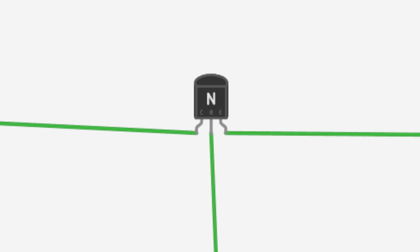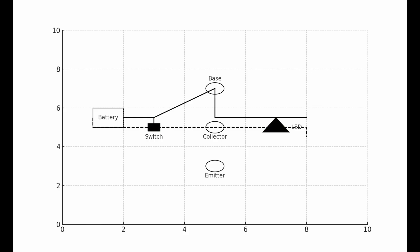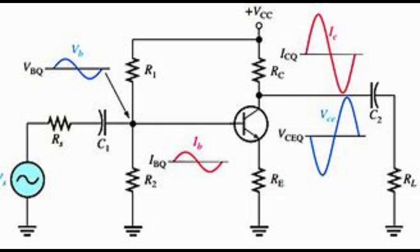Transistors need to be attached to a circuit. One main function is they can switch circuits on and off. The other main function is that they can amplify signals.